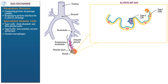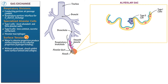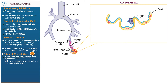Surfactant reduces surface tension so the alveoli don't collapse upon expiration. Water produces surface tension via its cohesive properties, which arise from its tendency to maximize the number of hydrogen bonds. So without surfactant, alveoli exhibit more surface tension and collapse. As an important clinical correlation, note that newborn respiratory distress syndrome occurs when a baby is born prematurely before the lungs can produce surfactant. This causes an increase in alveolar surface tension and the alveoli collapse on expiration.